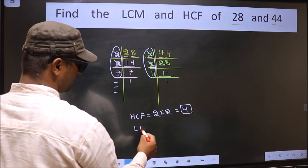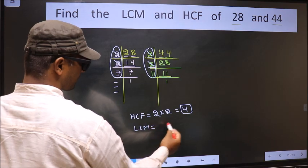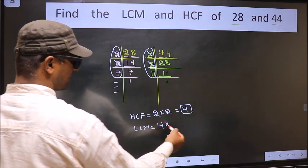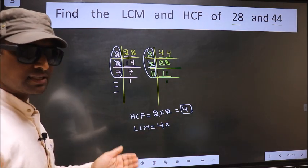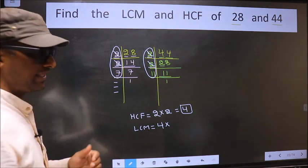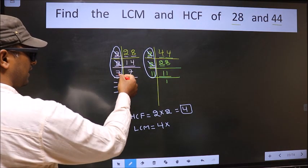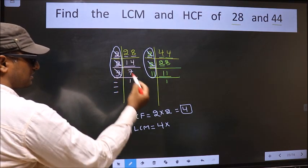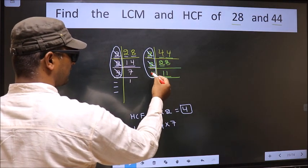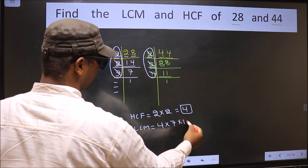Now to get LCM, whatever HCF we got, to this we should multiply by the numbers which we did not cut. What I mean is, over here 7 is not cut, so you cut 7 right here. Over here 11 is not cut, so you cut 11 right here.